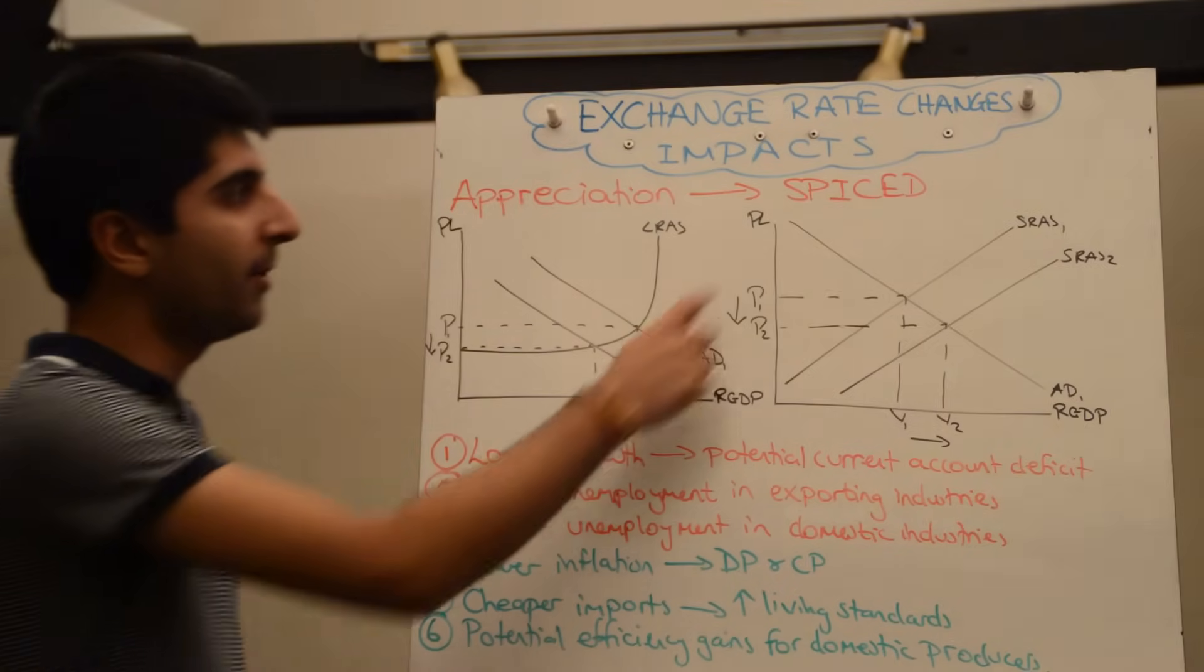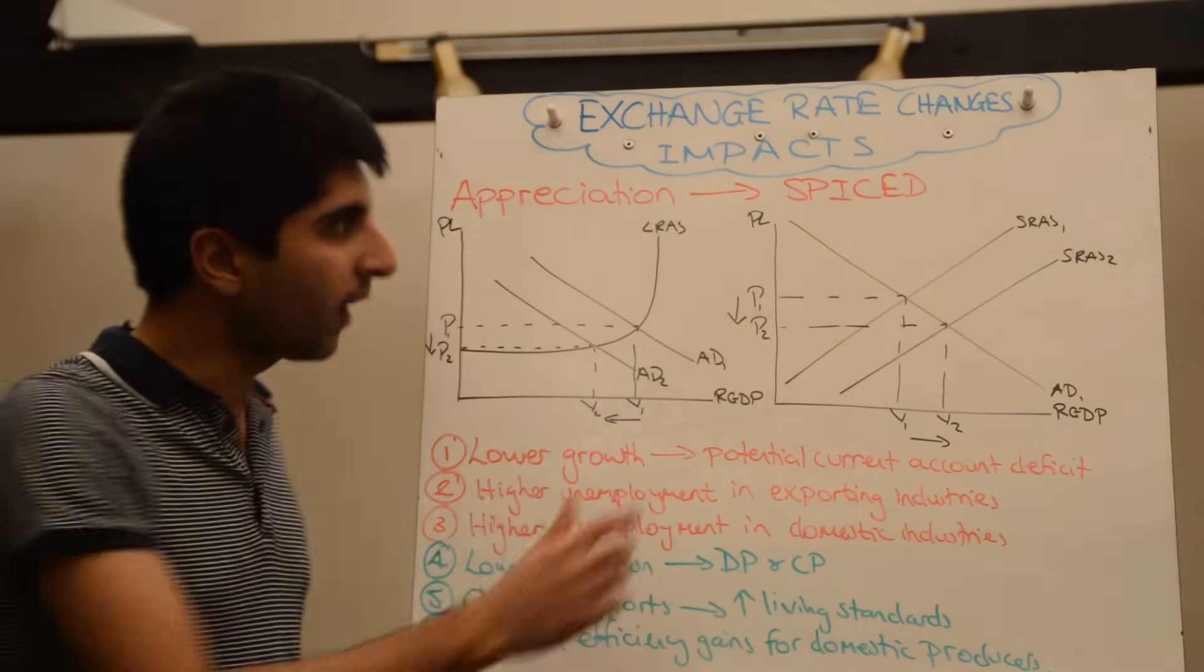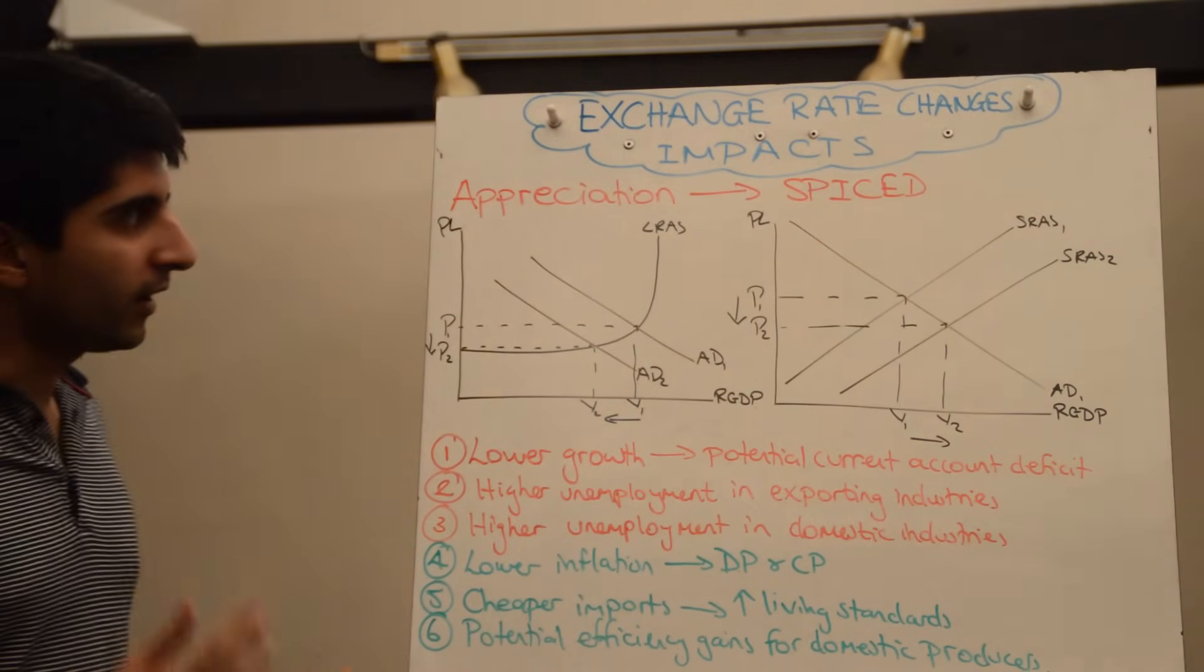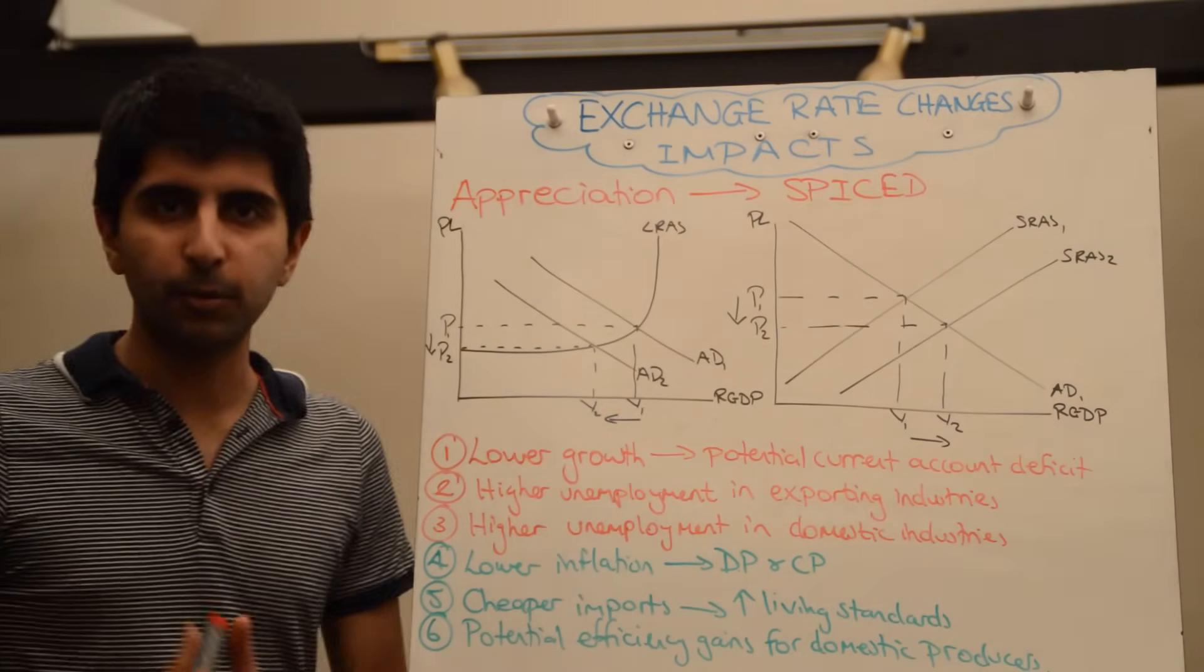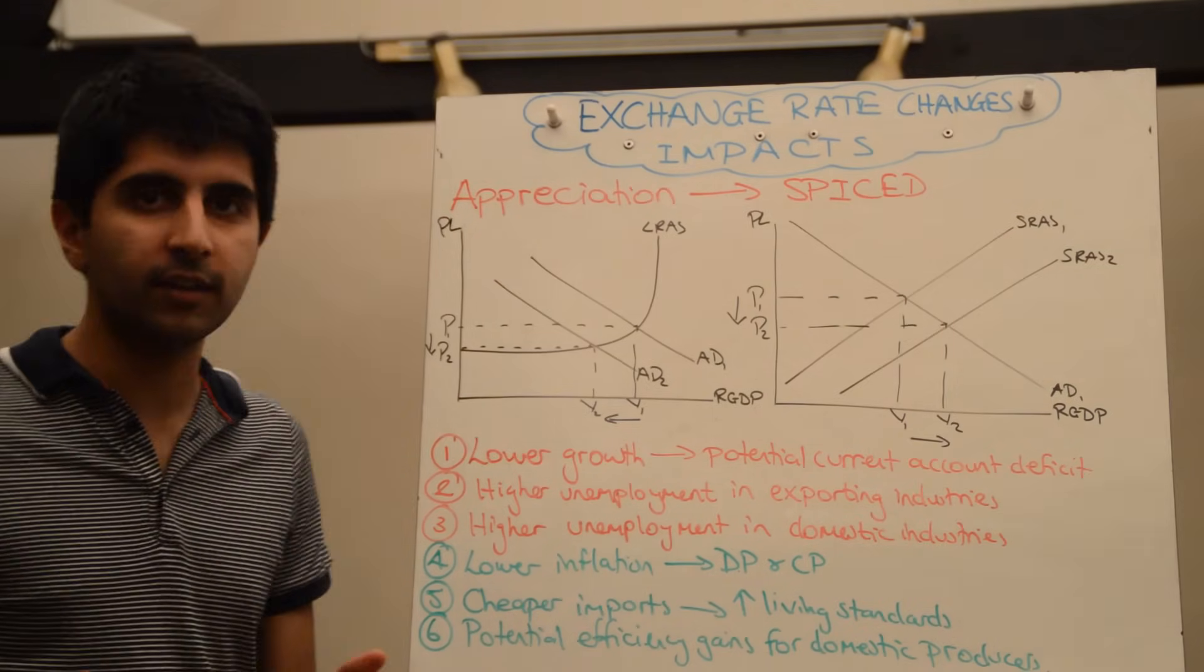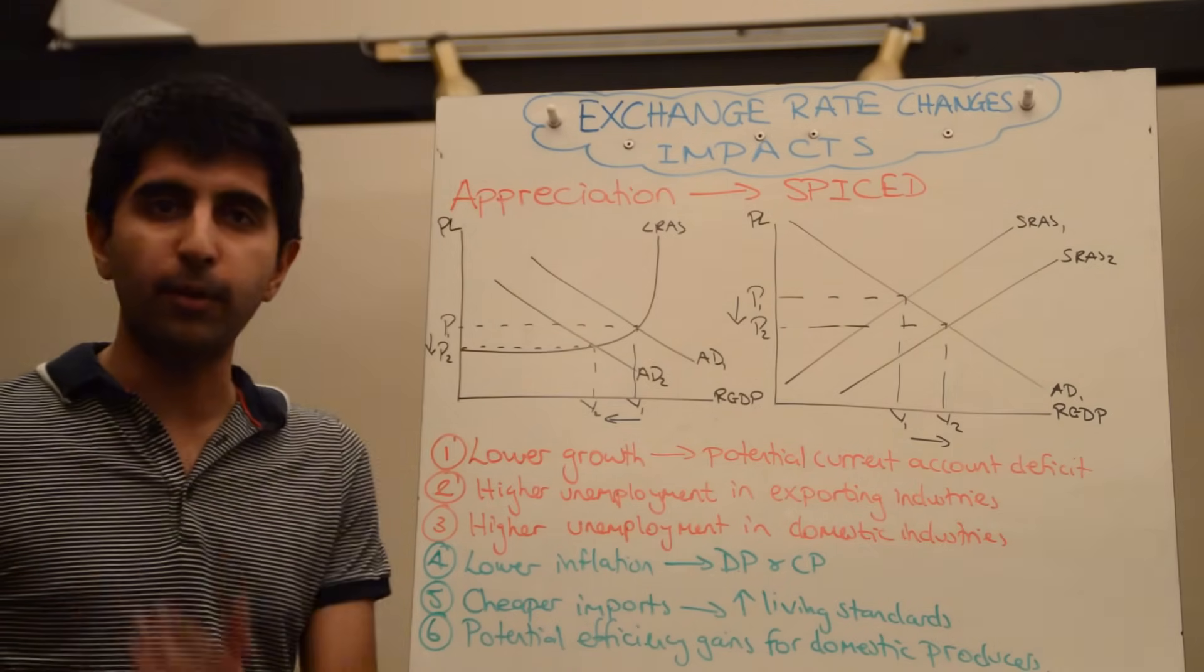A strong pound or strong currency means imports cheap, exports dear. On a diagram that tells you if imports are cheaper, exports are more expensive, net exports in the economy are likely to decrease. And as net exports is a component of AD, AD is likely to shift to the left as this diagram shows.